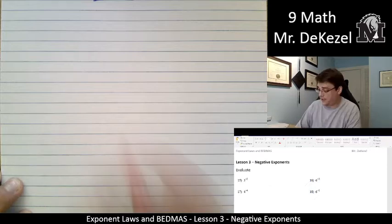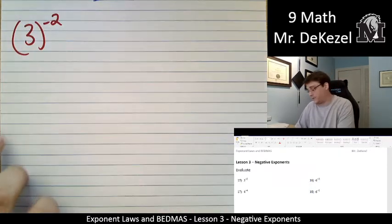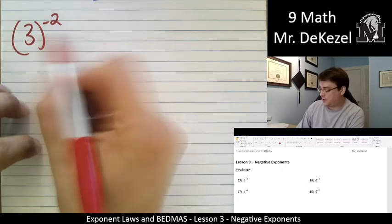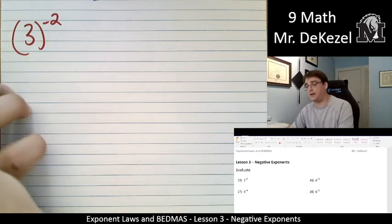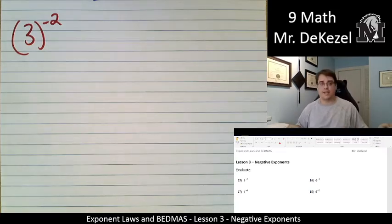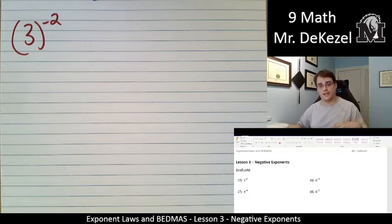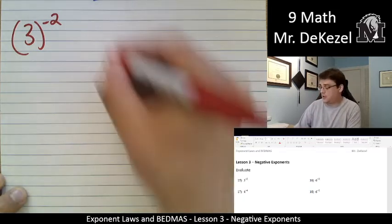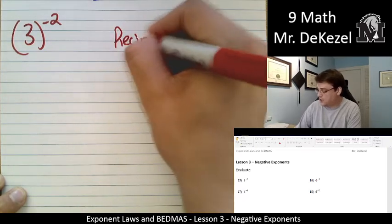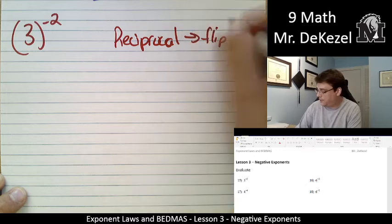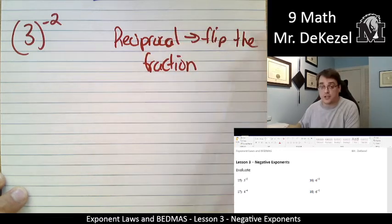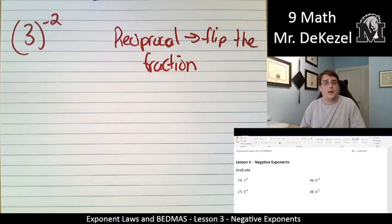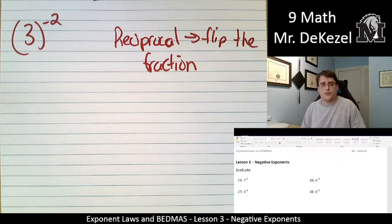The first one we have is 3 to the power of negative 2. This is part of why I like to show the brackets. It just really helps to make everything very clear about what we're trying to do. When we have a negative exponent, we really can't work with it. What we need to do is actually get rid of the negative exponent. We can take what we call a reciprocal. A reciprocal is when we flip the fraction. It's exactly like what we did when we were dividing fractions by fractions. We took the reciprocal of the bottom and multiplied it by the original fraction.